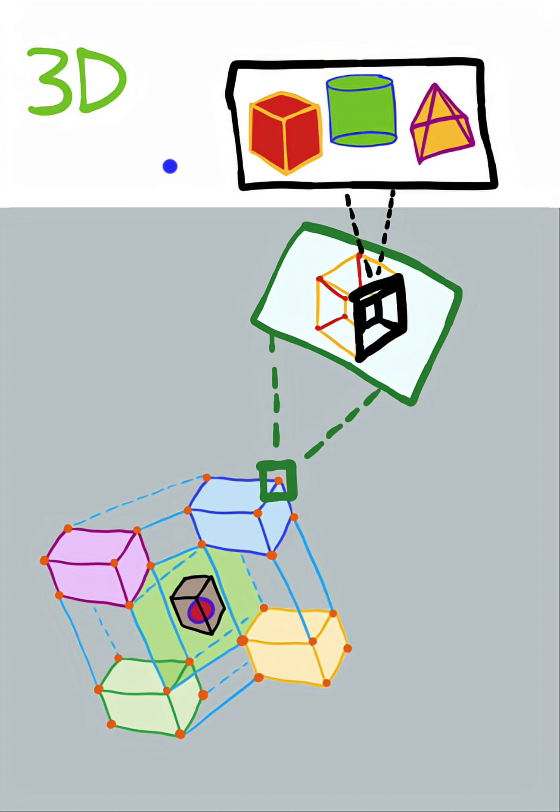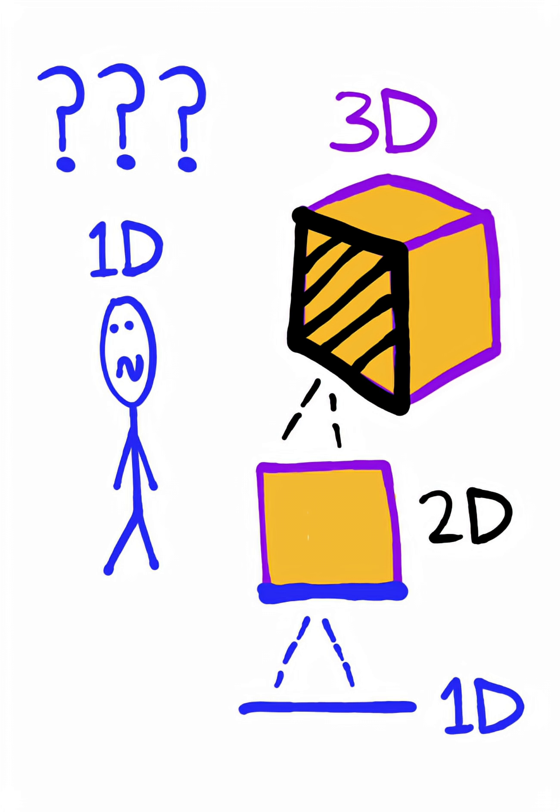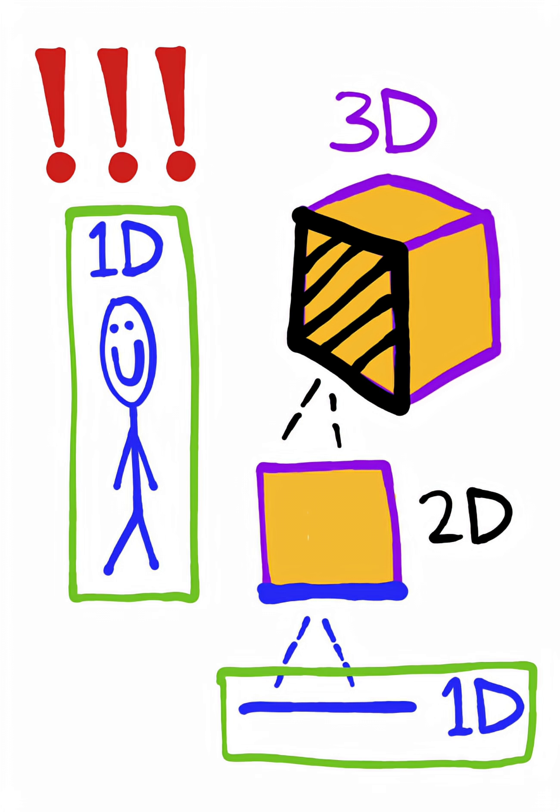Now if all of this seems super confusing, imagine a one-dimensional person trying to understand a cube. You'd have to break the cube down surface by edge before a recognizable shape appeared. Just like we as humans have to break down higher dimensional shapes as well.